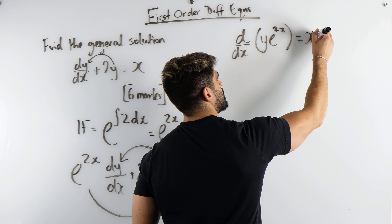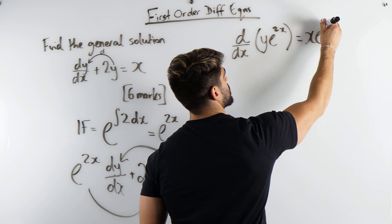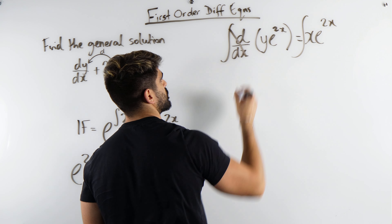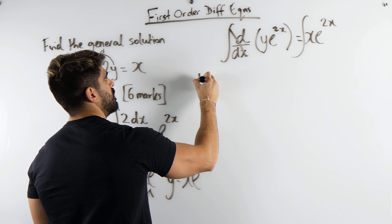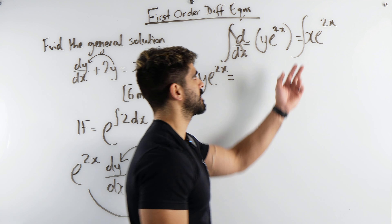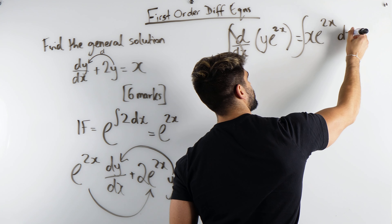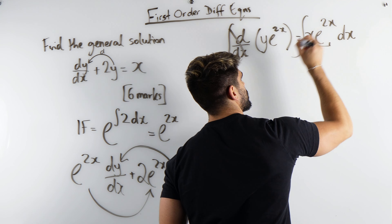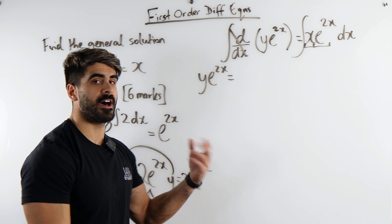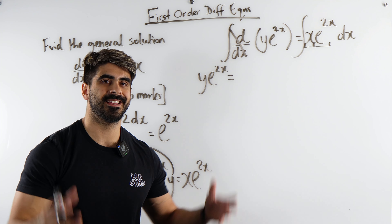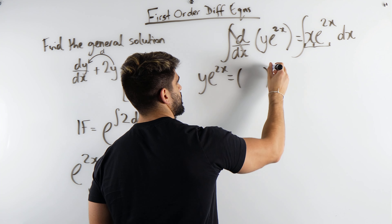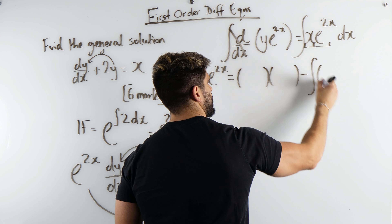So this differentiates to this, so it's this times this. So y·e to the 2x equals x·e to the 2x. Now we integrate both sides — that cancels — and we're left with y·e to the 2x equals the integral of x·e to the 2x. To integrate something like this with respect to x is two functions, so we use integration by parts. Now how do I remember integration by parts? Liddy.